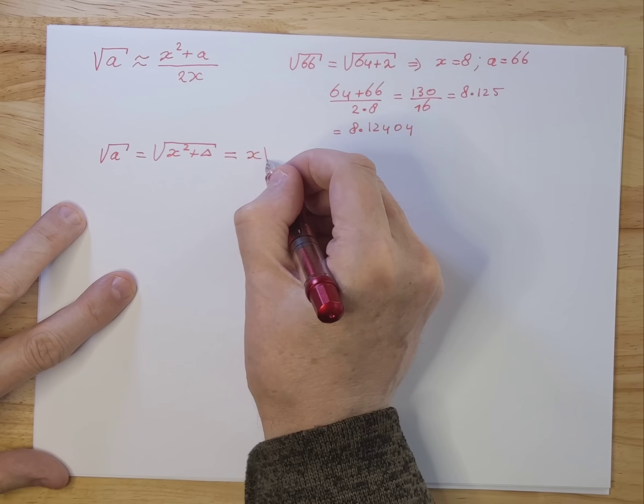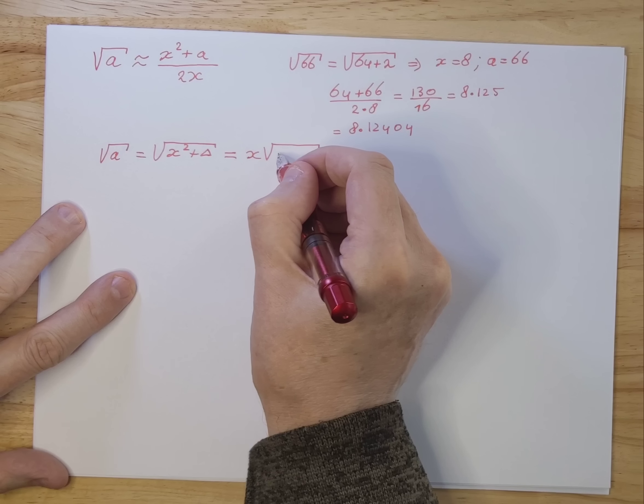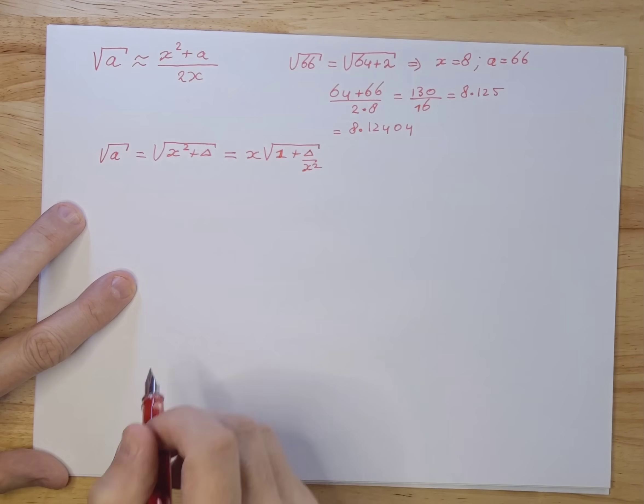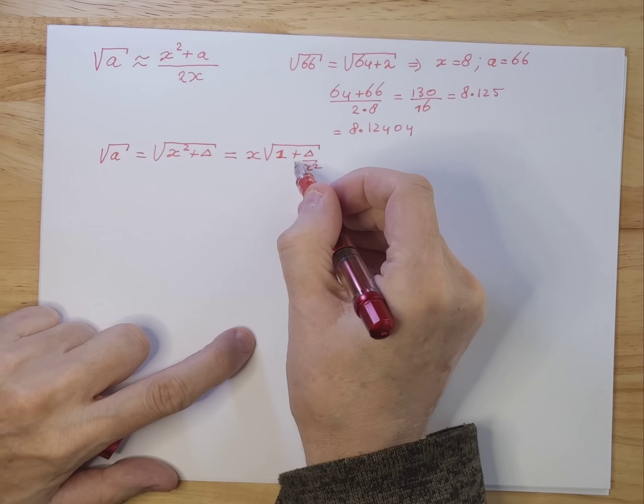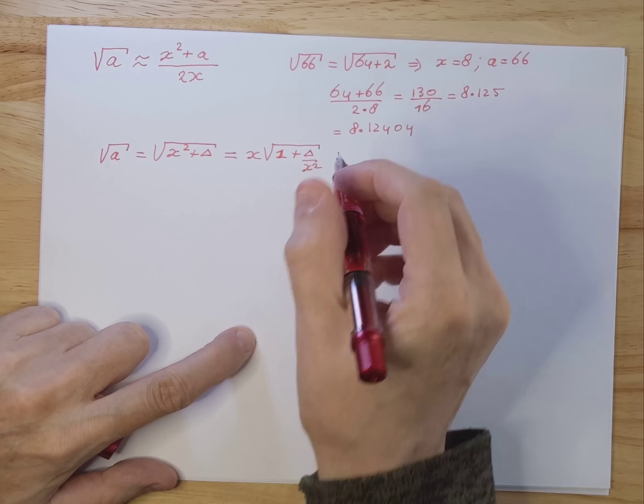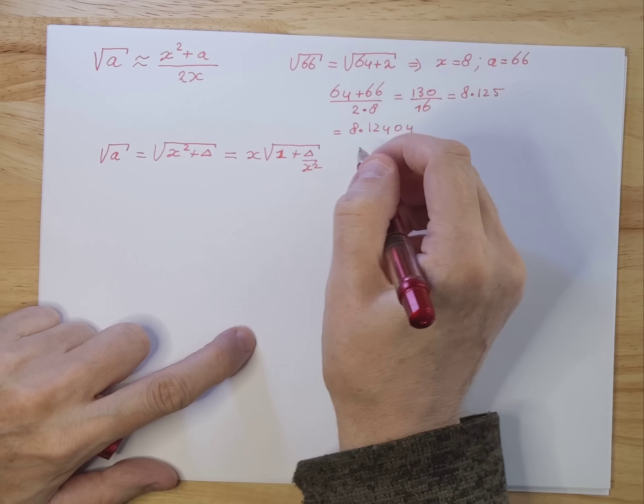So we can rewrite this a little bit more. We take x out. We still have the square root here. But now we get 1 plus delta divided by x squared. And this number is now really small compared to 1. So now you can confidently develop that in a Taylor series.